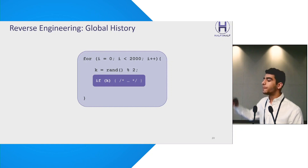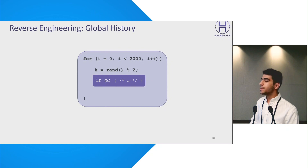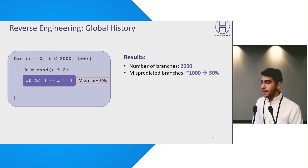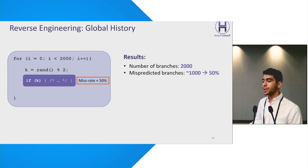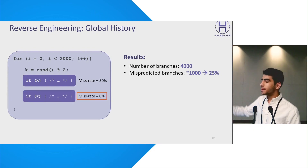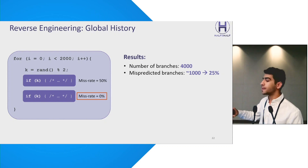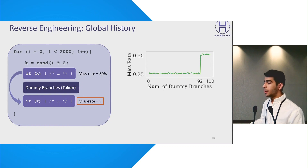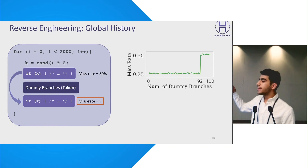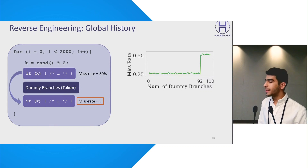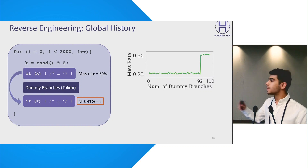Consider an if statement within a for loop comprising 2,000 iterations where the if statement branches based on a random bit, 0 or 1. Out of 2,000 occurrences, the branch predictor mispredicts around 1,000 times, indicating a 50% misprediction rate, because the condition is random and history is not helpful. Now assume two if statements with the same random condition. The misprediction rate for the first branch is again 50%, but it is 0% for the second branch, suggesting the branch predictor predicts the second branch based on the first. By increasing the distance between correlated branches and adding taken dummy branches between them, we can exhaust the global history and cause misprediction to the second branch.